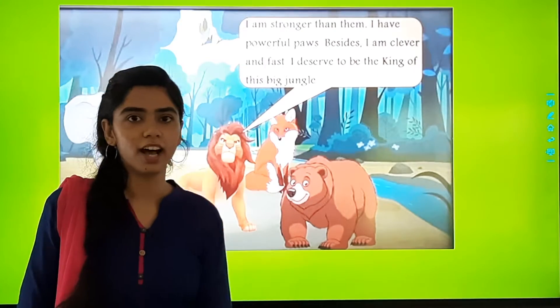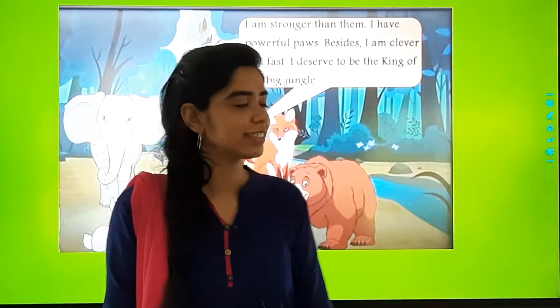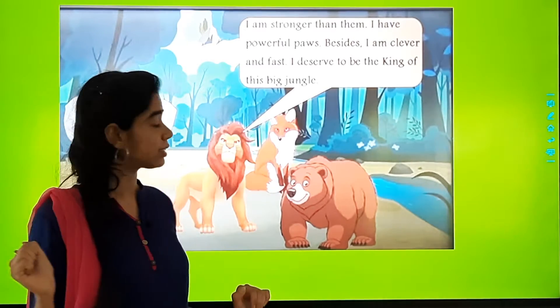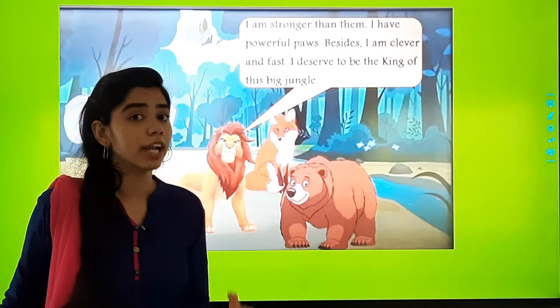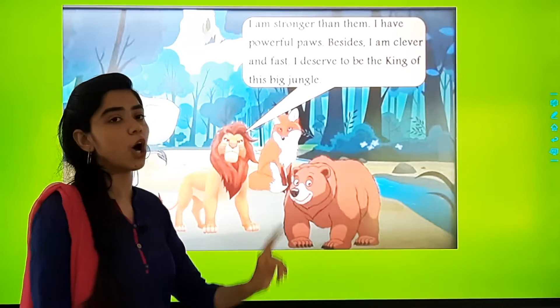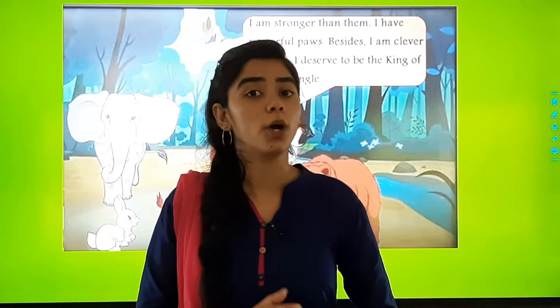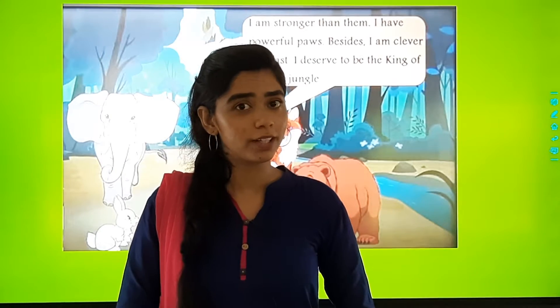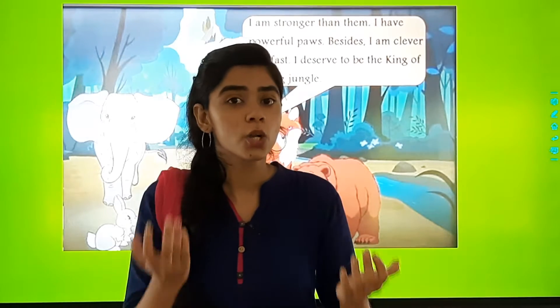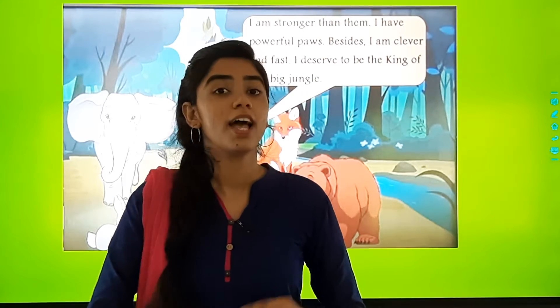Then at the last came the lion. Now what did the lion say? I am stronger than them. I have powerful paws. Besides, I am clever and fast. I deserve to be the king of the big jungle. So at the end what was decided? That the lion should be the king of the jungle. Why? Because of his qualities. He deserves to be the king of the jungle.